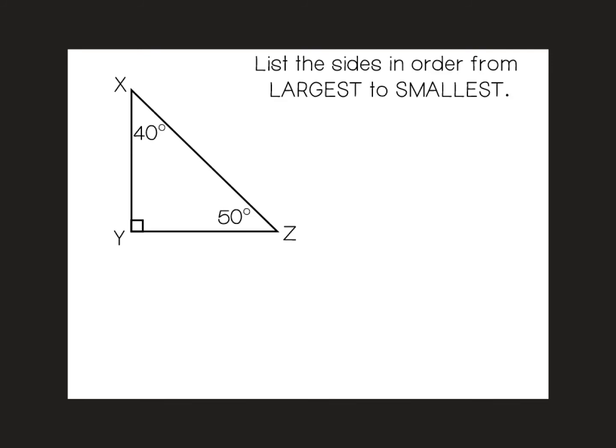This example asks us to list the sides in order from largest to smallest. So we want to start with our largest angle, which is 90 degrees. Opposite of that is this side here, which is XZ.